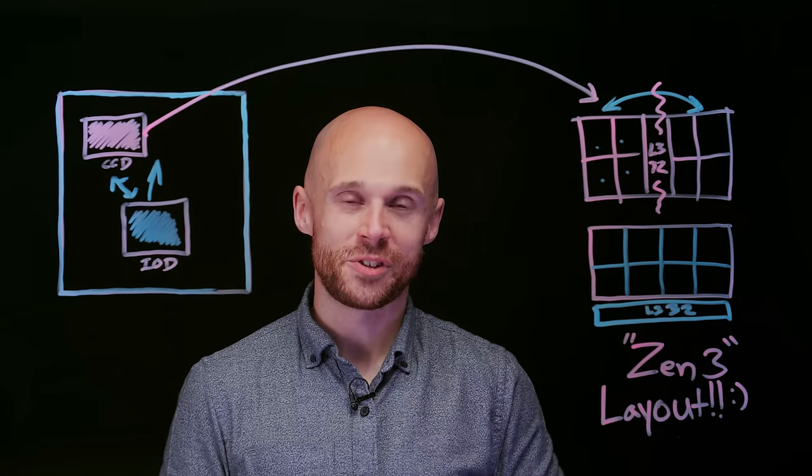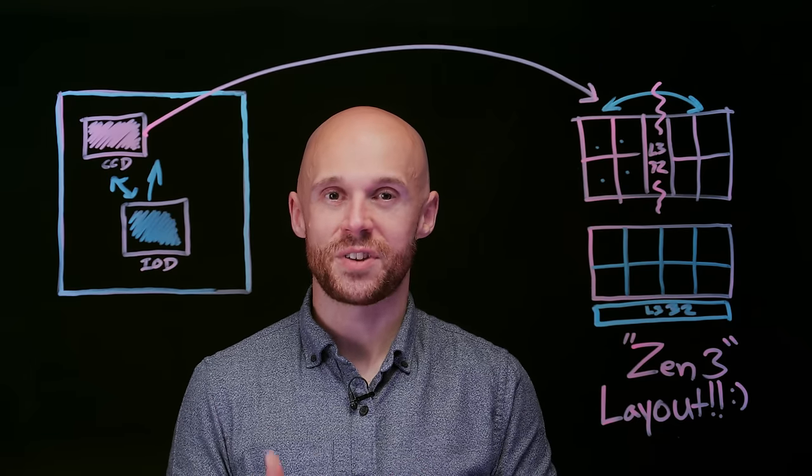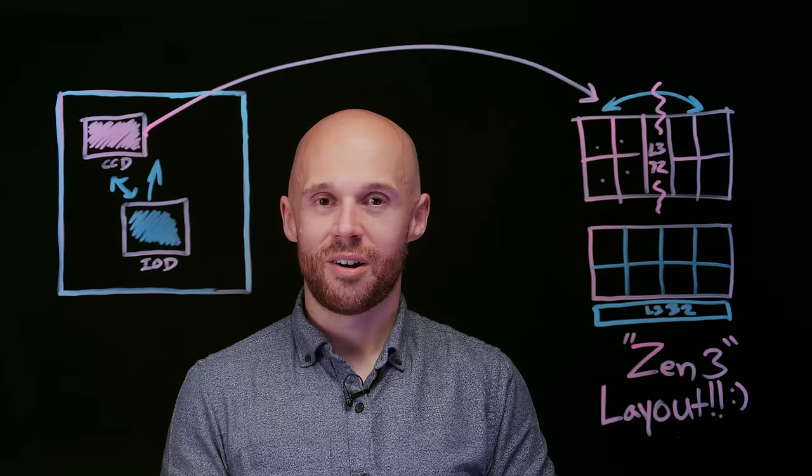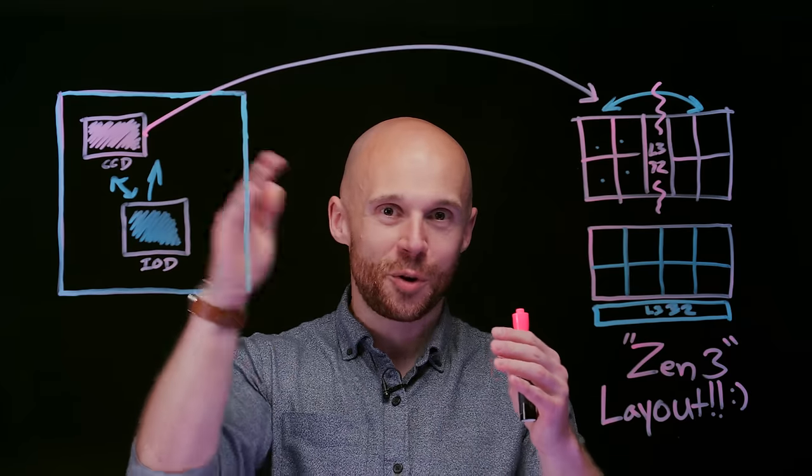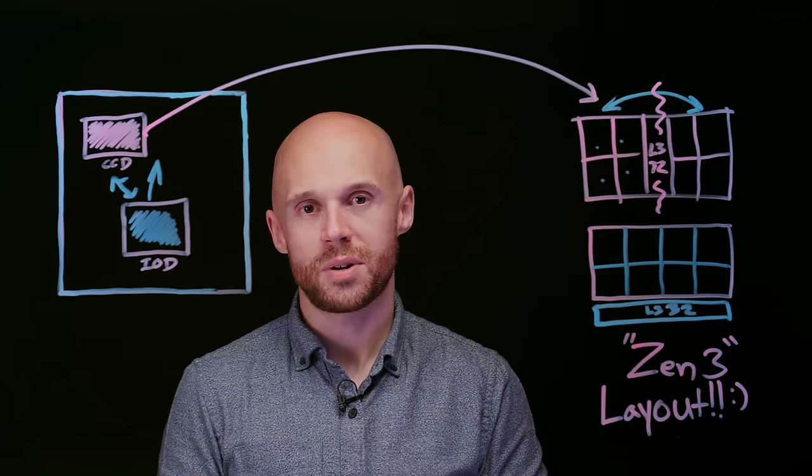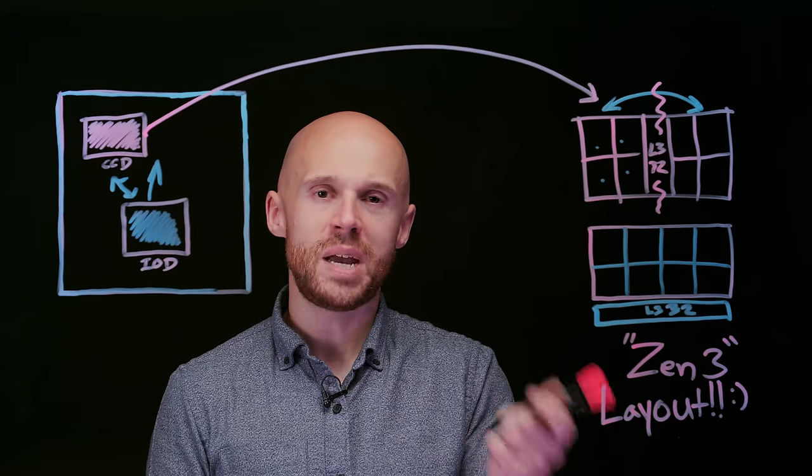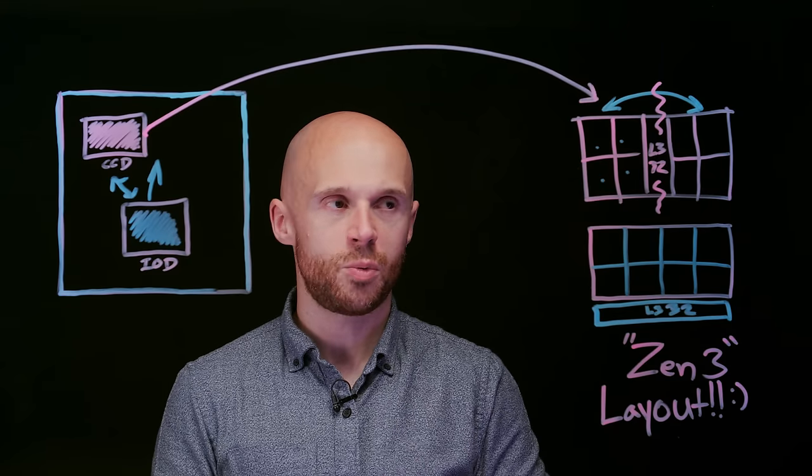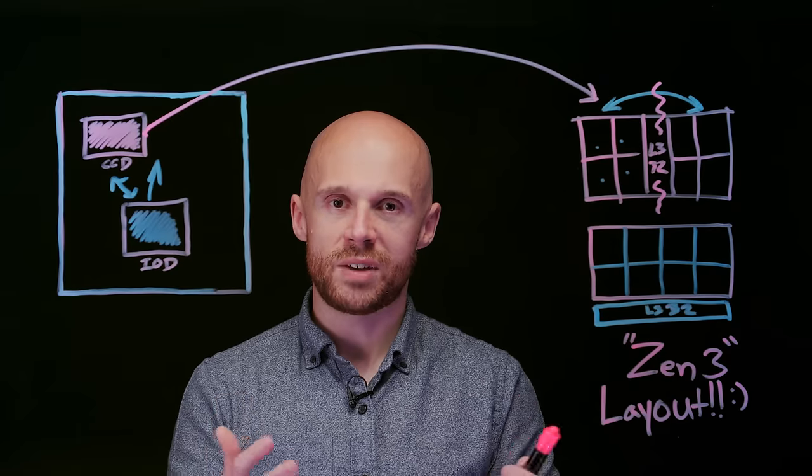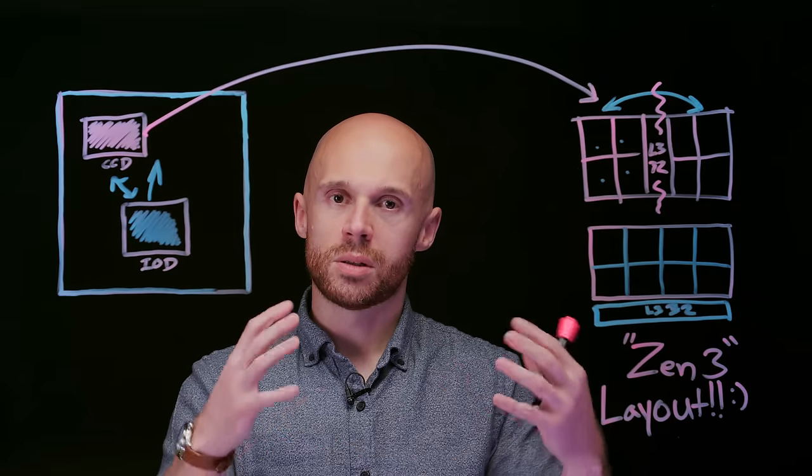Oftentimes it's difficult to talk about architectural changes in a diagram. Some of them are a little new connection from point A to point B, and that doesn't show up well in a picture. But this one does. This is a major design change coming into Zen 3, bringing eight cores and 32 megs of cache together in one large block.